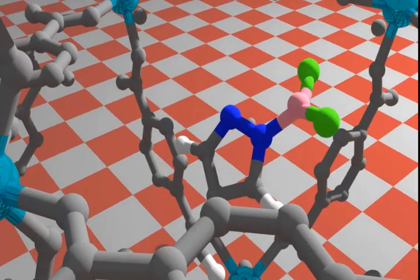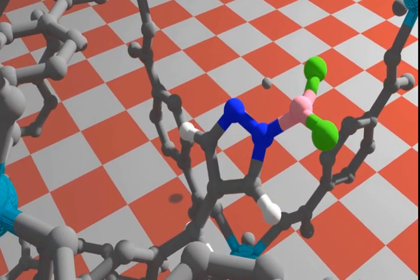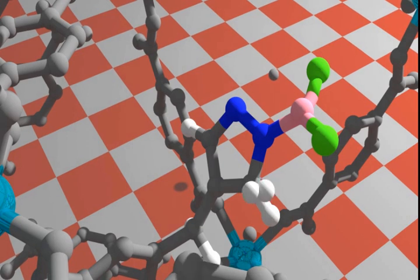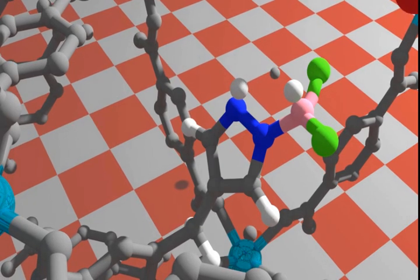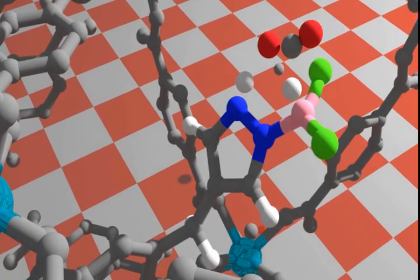We have tested the reaction CO2 hydrogenation to produce formic acid, which has two elementary steps. Step one is to dissociate the H2 molecule. Step two is to hydrogenate CO2 to formic acid.